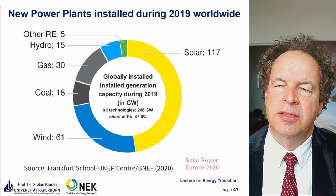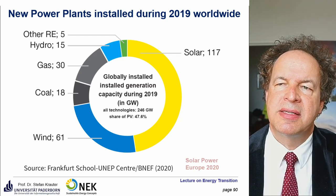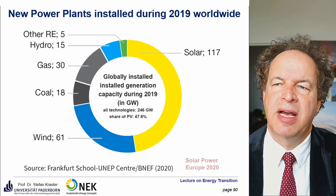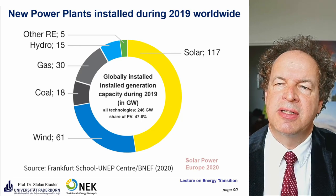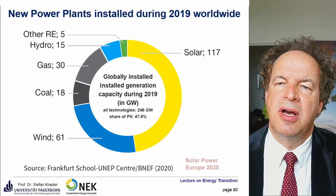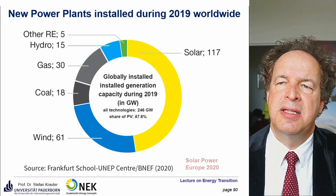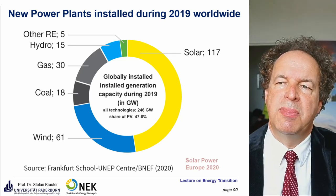Taking a world perspective on new power plant installations in 2019: solar led with 117 GW of installed nominal power, followed by wind at 61 GW, gas at 30 GW, coal at 18 GW, hydro at 15 GW, and other renewables at 5 GW. Nuclear actually had a net negative addition in 2019 — more capacity was dismantled than installed — so effectively no new nuclear power in 2019.